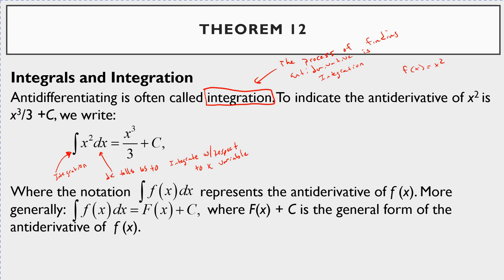You'll see in later examples that you can integrate with respect to different variables — like if this had been y squared, we could integrate with respect to y. What we're saying here is: if you're given the expression x cubed over 3 plus c, this is the anti-derivative of f of x equals x squared. The integral of f of x dx represents the anti-derivative of f of x, and more generally equals capital F of x plus c.